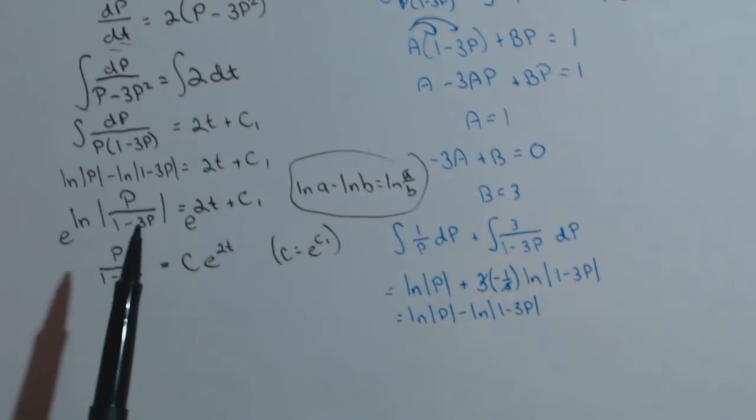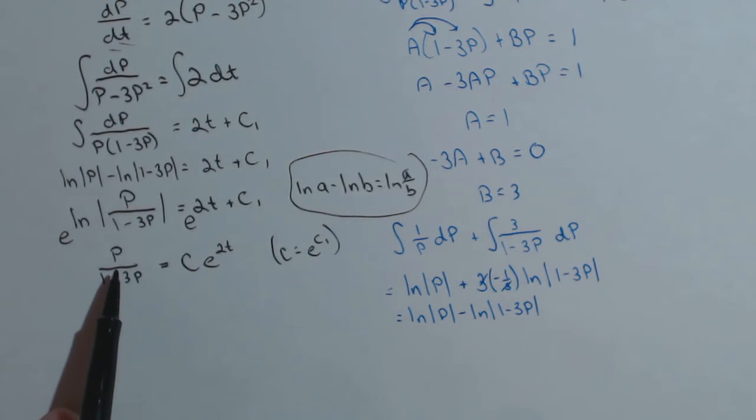So now we're almost there. It'd be nice to think that we're done now, but we're not, because we actually have to solve for p. So we're just going to need to do some algebra to get this thing solved for p. And first thing we're going to do, anytime you've got this denominator, get rid of it. We're going to multiply both sides by 1 minus 3p.